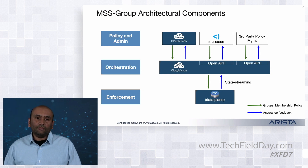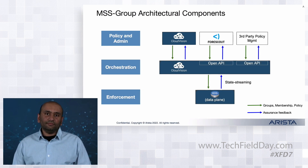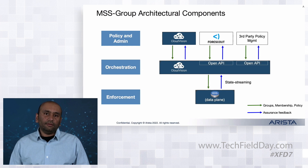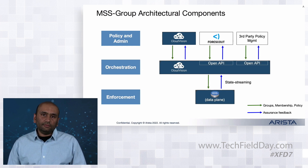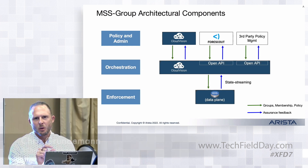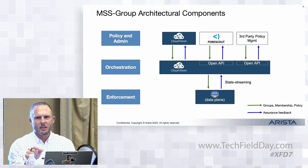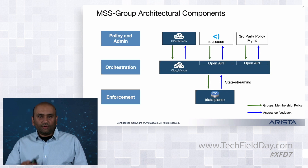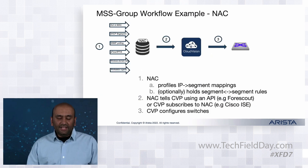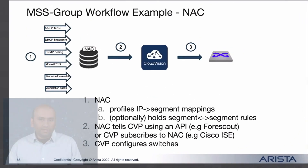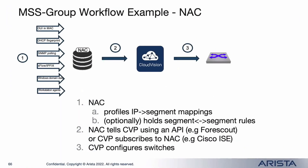Follow-up question: Since there's no tagging or packet manipulation, the group identity still has to be looked up in a table, right? Answer: Yes, and we actually do it all through hardware lookups. It's all contained local to the box. Here's a quick workflow of how MSS Group works with the NAC.